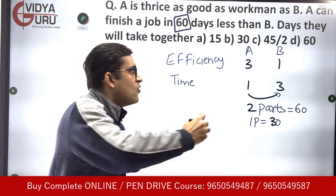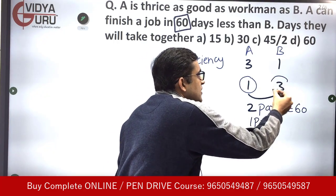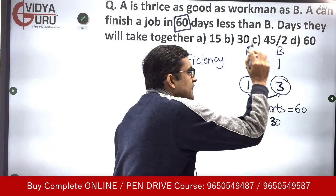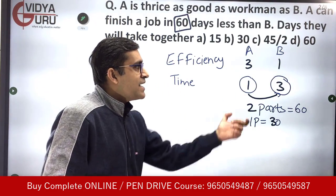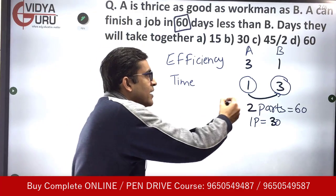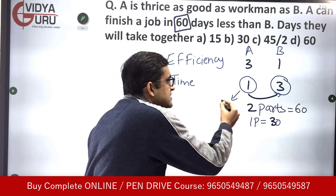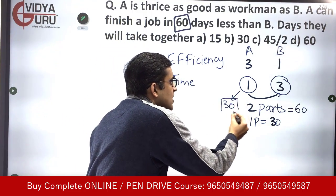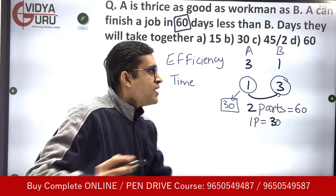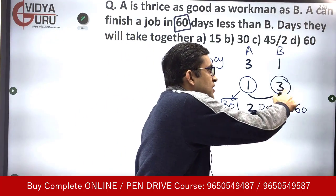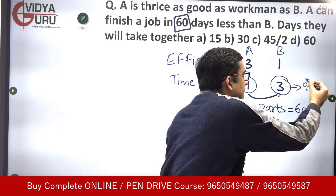A takes one part of time, so A takes 30 days. B takes three parts of time, so B takes 90 days.